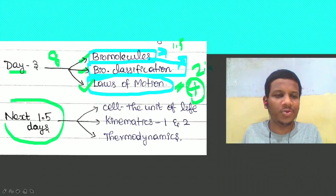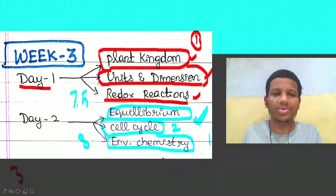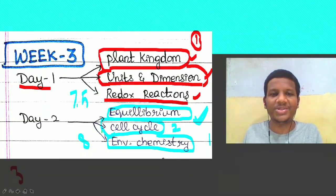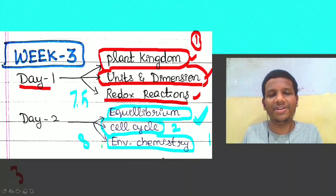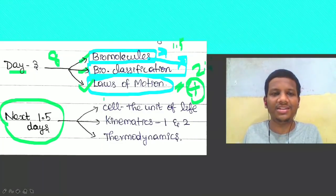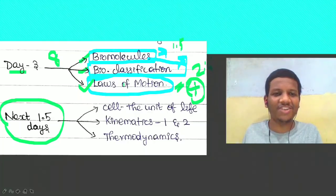To recap the first three days: Day 1 — Plant Kingdom, Units and Dimensions, and Redox Reactions. Day 2 — Equilibrium (both chemical and ionic), Cell Cycle and Cell Division, and Environmental Chemistry. Day 3 — Biomolecules, Biological Classification, and Newton's Laws of Motion.